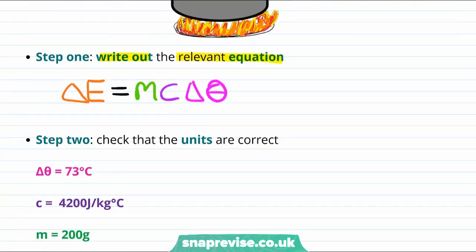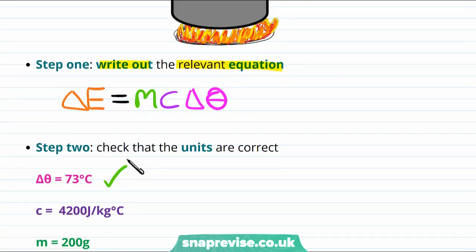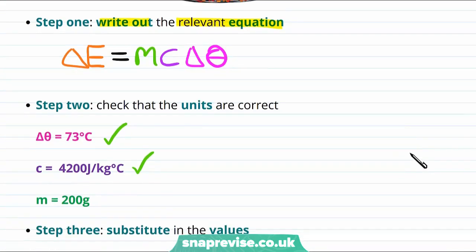The second step is to check that all quantities are in the correct units. The temperature change of 73 degrees centigrade is already correct, and the specific heat capacity of 4200 joules per kilogram per degree centigrade is also correct. However, the mass was given as 200 grams, which needs to be in kilograms. To convert from grams to kilograms we divide by 1000, giving us 0.2 kilograms.